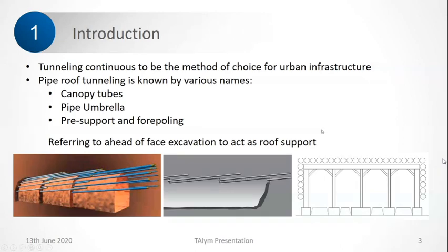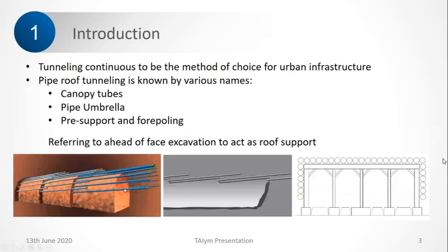Everyone in this industry knows that tunneling continues to be the method of choice for urban infrastructure because of large population and limited space available — so we are going underground. The pipe roof is one of the methods for shallow overburden. Pipe roof is known by various names: canopy tubes, pipe umbrella, pre-support, and fore-poling. When we say pipe roofs, it's usually this kind of pre-support which we install before excavation. But I'm not going to discuss that kind of pre-support — I'm going to discuss something different.